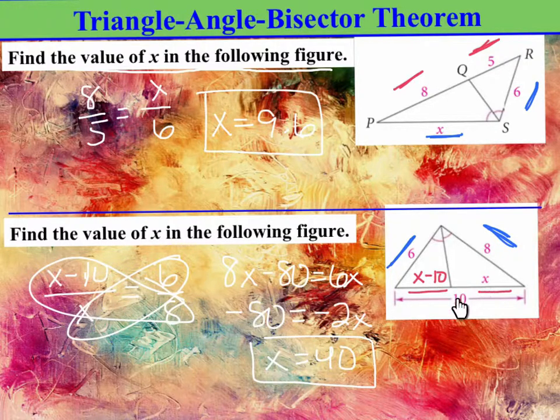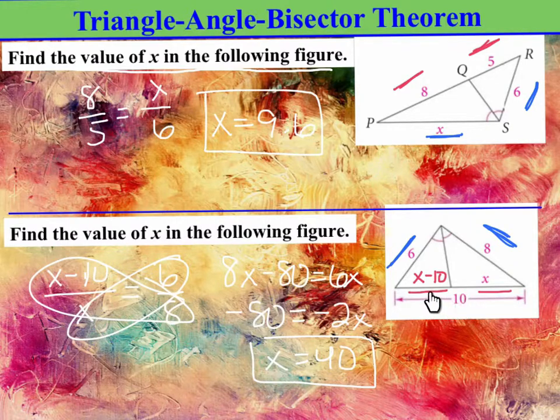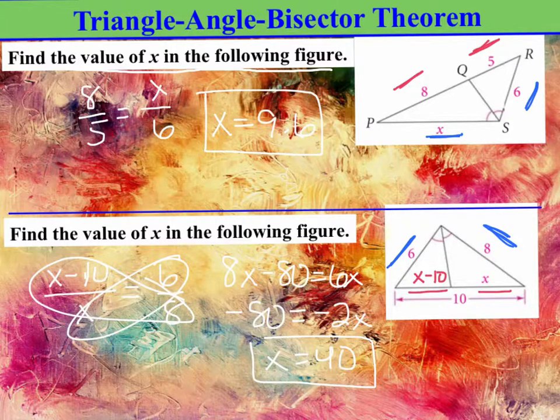And here, this one's a little tricky. This whole length is 10, so then this side would be X subtracted by 10. So, you know what? Actually, I made a mistake. It should not be 10 minus X, or X minus 10. It should be 10 minus X, right? Because the whole side is 10, and if you subtract X, you get this leftover side. So this is going to change slightly.